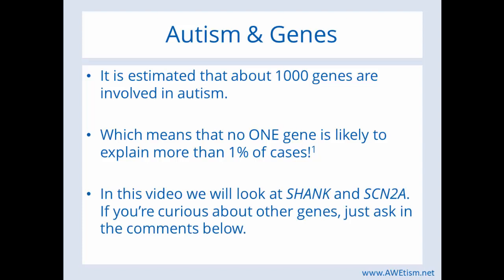I had a parent ask me to make a video about Schenck, so that's what I'm doing here. And SCN2A is a very recently discovered gene in autism, so I combined the two. If you're curious about other genes or have other types of questions, just ask in the comments below — I read them all.